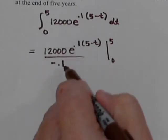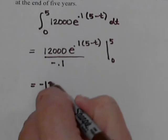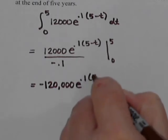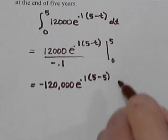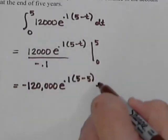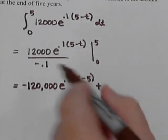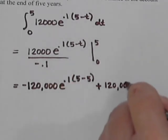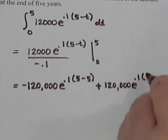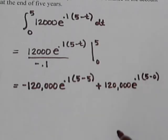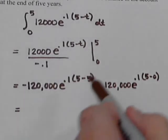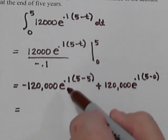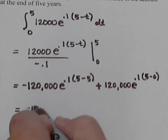Twelve thousand divided by negative 0.1 gives negative one hundred twenty thousand. So we have negative one hundred twenty thousand times e to the power of 0.1(5 minus 5), minus a negative — so the second term becomes a plus, because we always subtract but we had a negative here. Twelve thousand divided by 0.1 is still one hundred twenty thousand times e to the power of 0.1(5 minus 0). Simplifying: five minus five is zero, so e to the zero is one. Negative one hundred twenty thousand times one is negative one hundred twenty thousand.